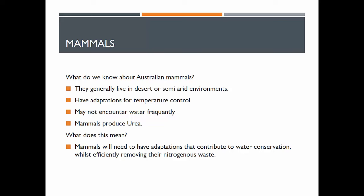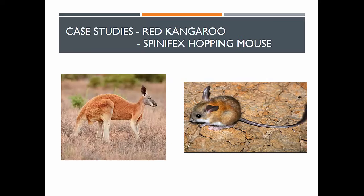Now let's look at mammals. Australian terrestrial mammals generally live in desert or semi-arid environments. They have adaptations for temperature control, may not encounter water frequently, and we know that mammals produce urea. This means that mammals need adaptations that contribute to water conservation whilst efficiently removing their nitrogenous waste. Two particular examples are the red kangaroo and the spinifex hopping mouse.